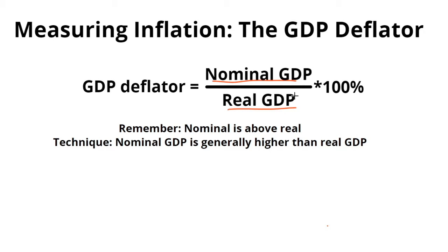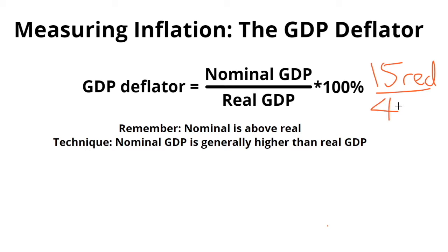In math, if you ever want to find the percentage of something — let's say you have 15 red stickers out of 45 total stickers — you divide 15 by 45 and multiply it by 100%, and in this case that would be equal to 33%.